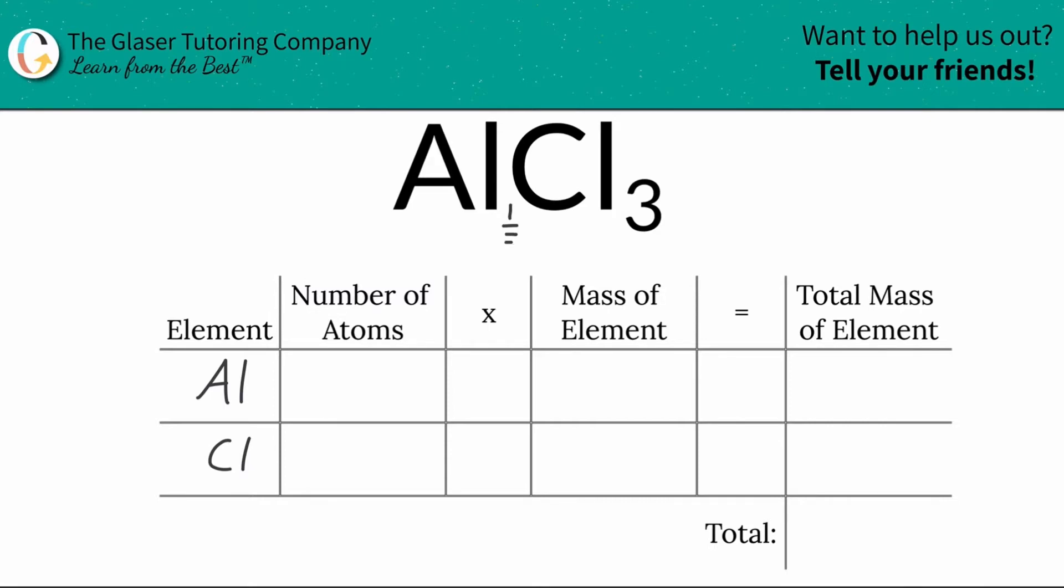At the bottom of aluminum there is an invisible one, so that means there's one aluminum. And at the bottom of chlorine here the subscript is going to be three. So I know I have three chlorines.